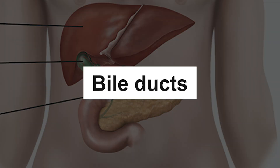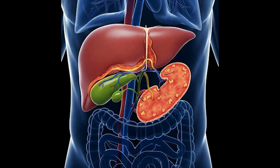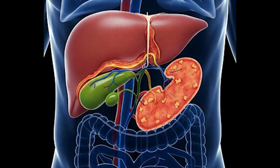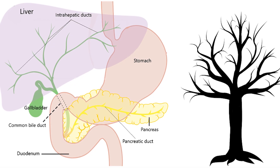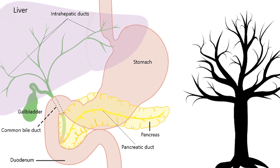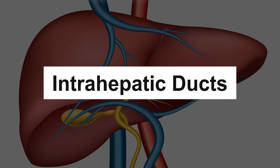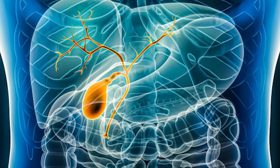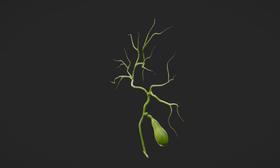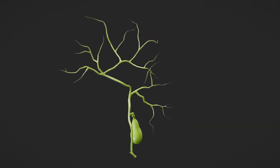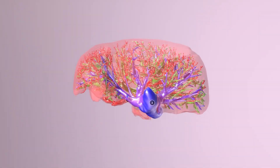Bile ducts. Bile ducts are tubular structures that vary in size and complexity. They form a branching network that begins within the liver and extends through the biliary system to deliver bile to the small intestine. The main components of the bile duct system include the intrahepatic ducts, the extrahepatic ducts, and the common bile duct. Intrahepatic ducts. These are the smaller bile ducts located within the liver itself. They collect bile from the liver's hepatocytes and converge to form larger ducts that eventually exit the liver, transporting bile from the liver's lobules to the extrahepatic ducts.